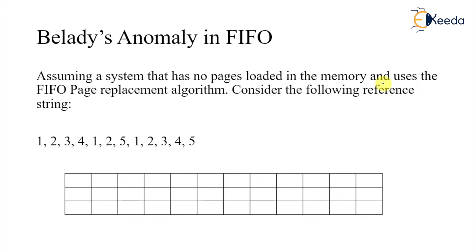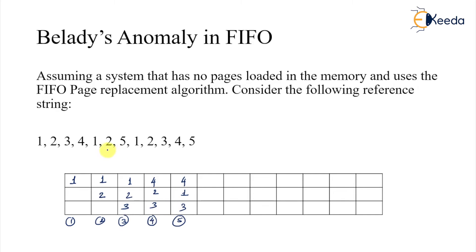Assuming a system has no pages loaded in memory and uses a FIFO replacement algorithm, consider the reference string: 1, 2, 3, 2, 1, 2, 3. With three frames: 1 causes page fault one, 2 causes page fault two, 3 causes page fault three. Then 4 comes — 1 is replaced, giving us 4, 2, 3 — that's page fault four. Then 1 comes, replacing 2, giving 4, 1, 3 — page fault five. Then 2 comes: 4, 1, 2 — page fault six.